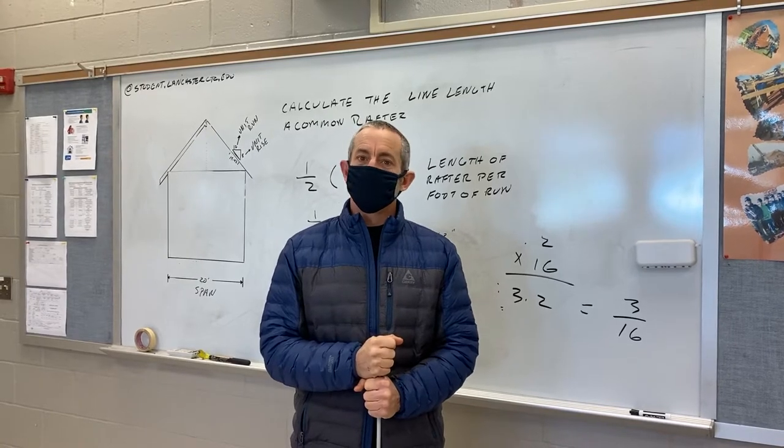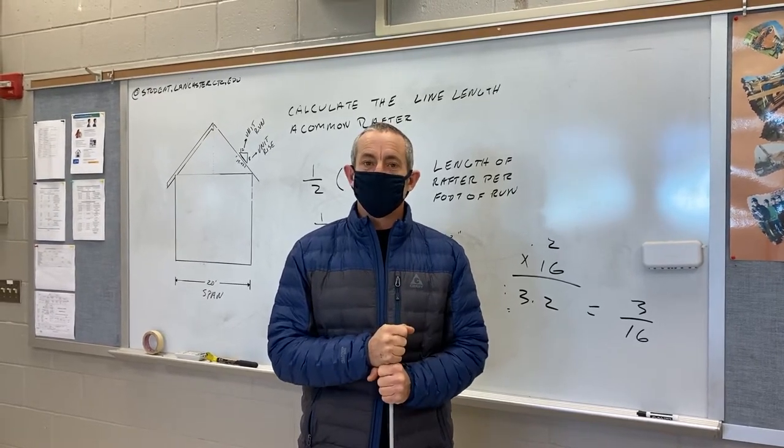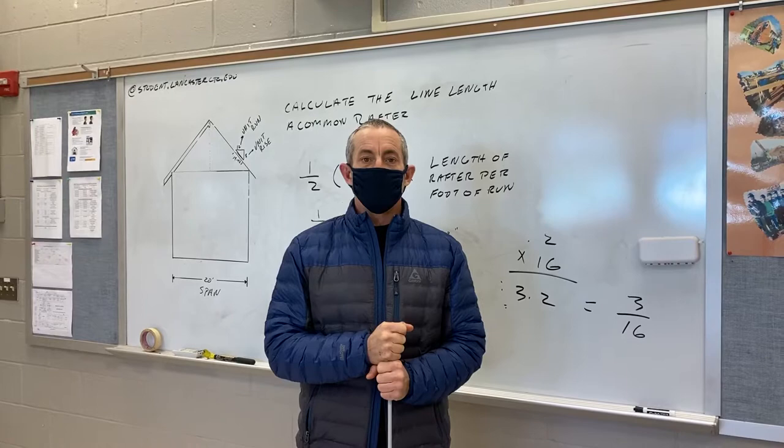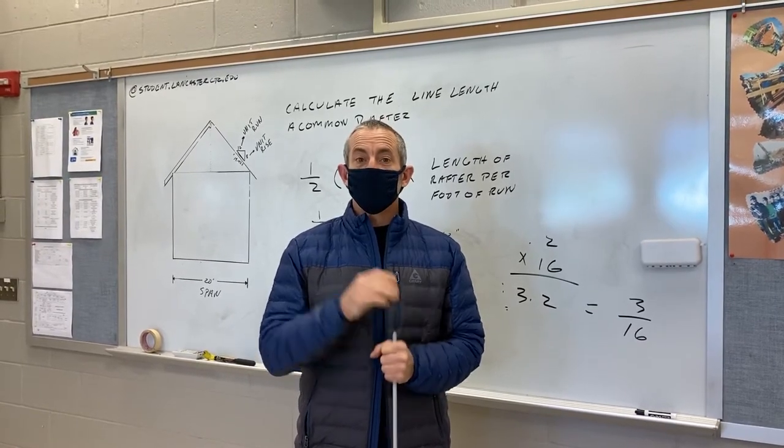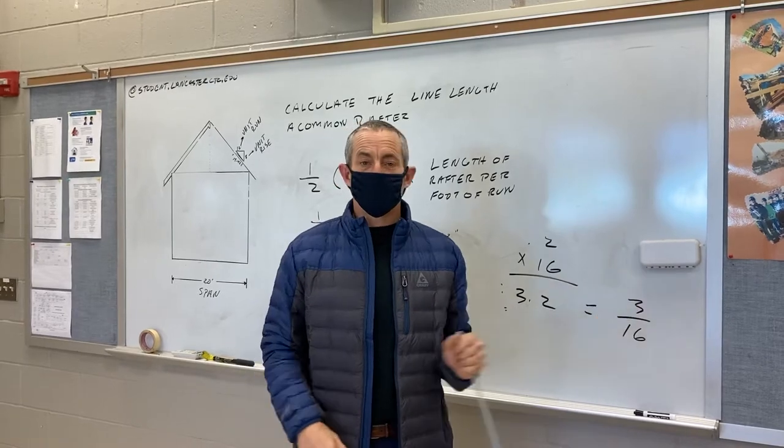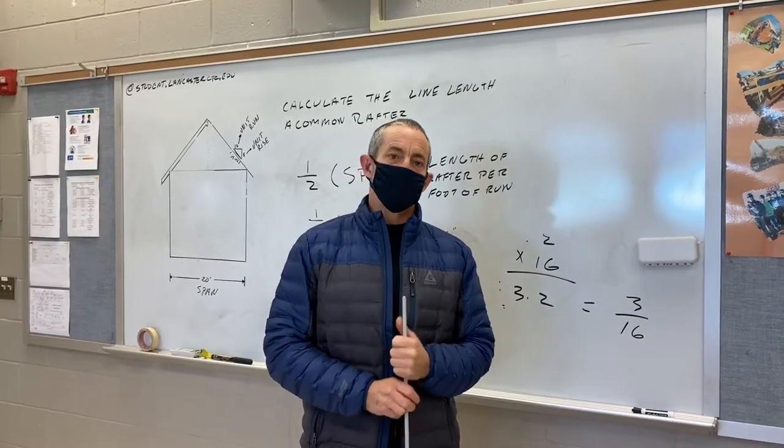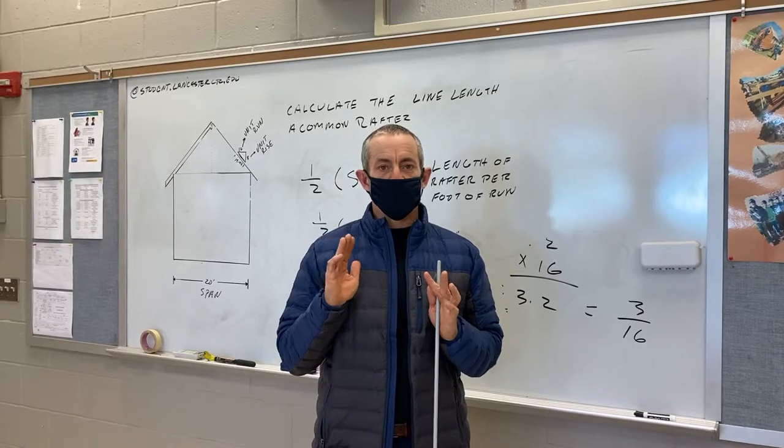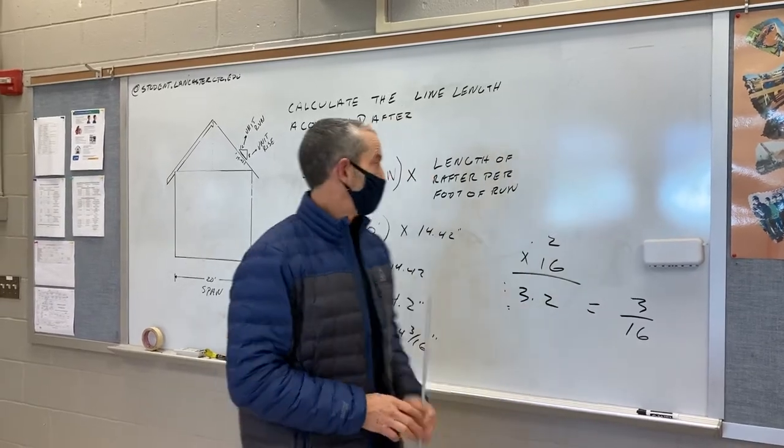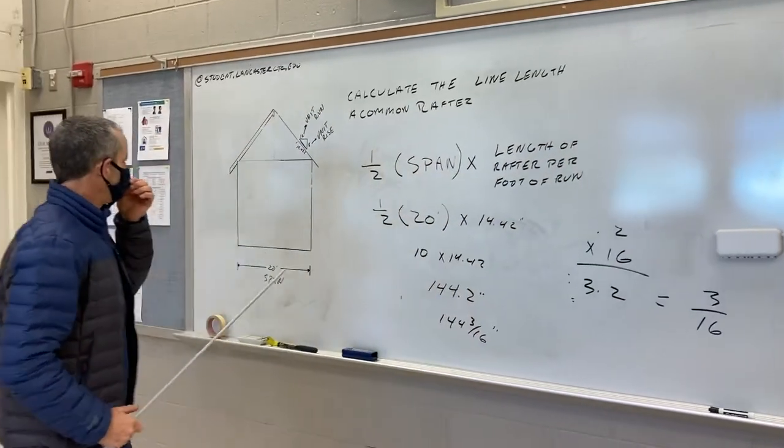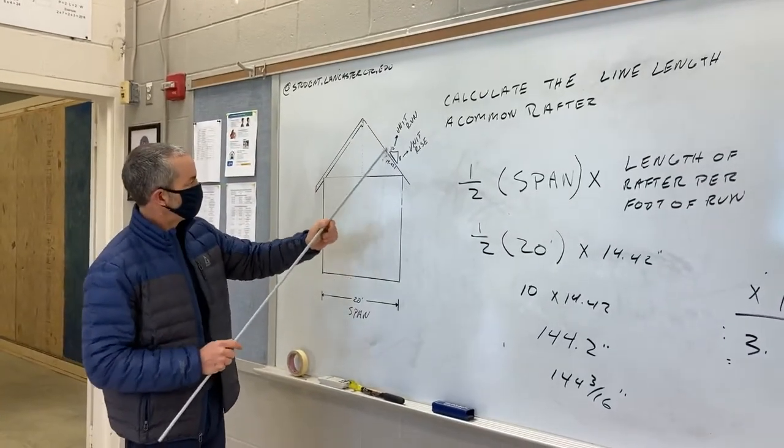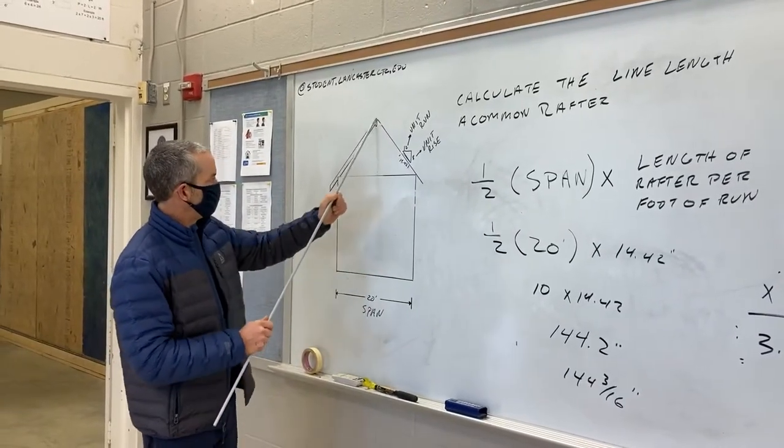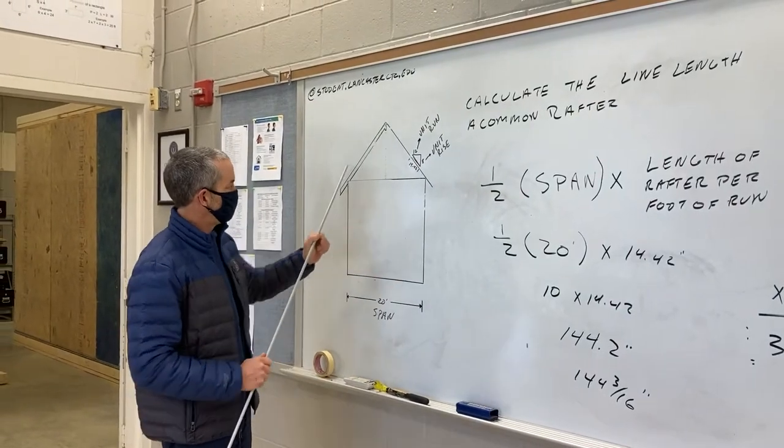So common rafters are the easiest type of rafter typically to lay out and we are going to use our common rafter on a gable roof like we talked about in the PowerPoint presentation. This is the main rafter that's used in constructing a gable roof. So when we're talking about a gable roof, we're talking about a roof that looks like this. It's a gable end, or this is what we'll refer to as the gable end of the roof.